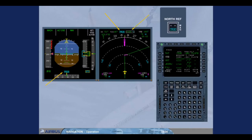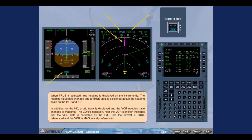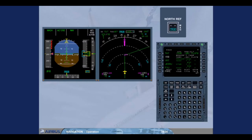In addition, on the ND, a grid track is displayed and the VOR needles have changed to magenta. The correction indication near the VOR identifier indicates that the VOR data is corrected by the FM. Here, the aircraft is true referenced and the VOR is magnetically referenced. On the MCDU, the bearing or track for each waypoint has also changed to true, as indicated by a T letter near each vector.